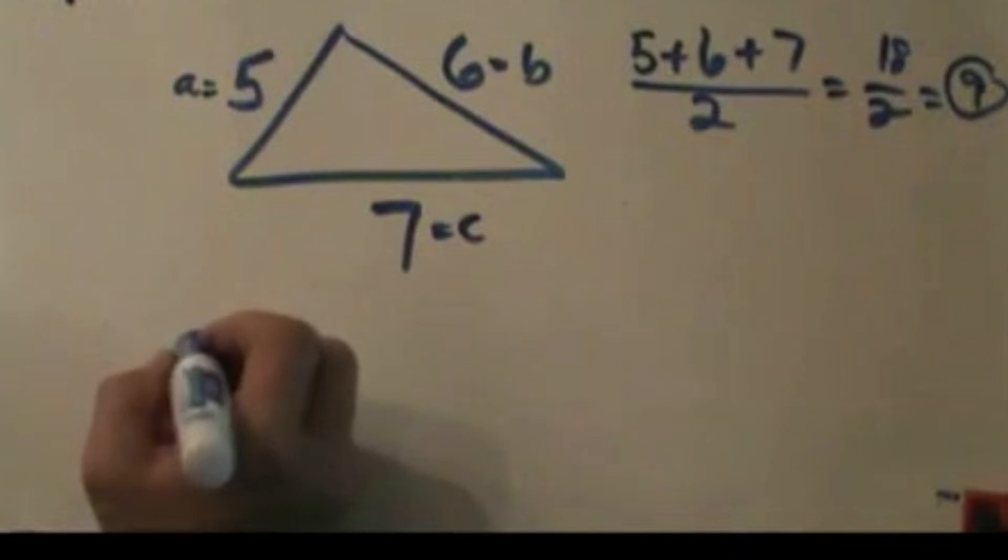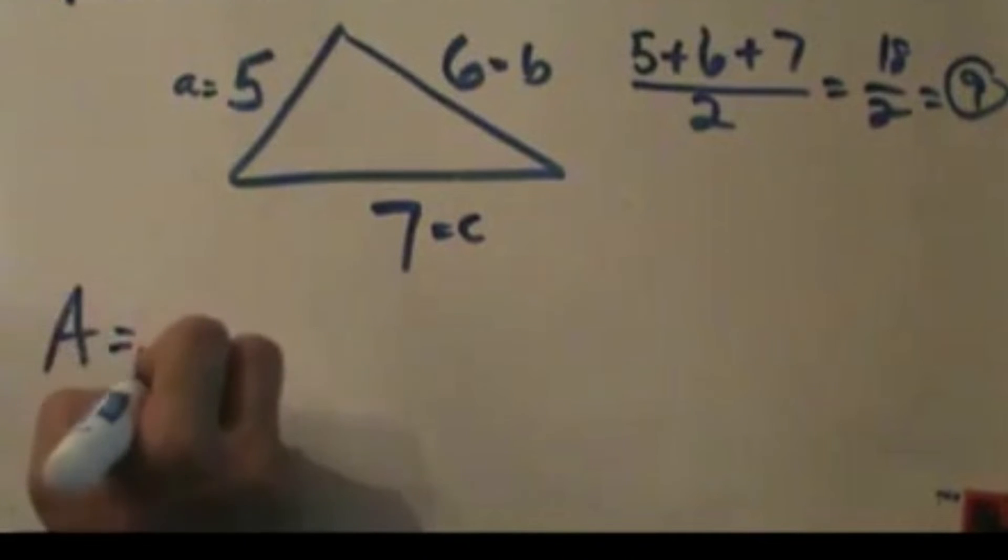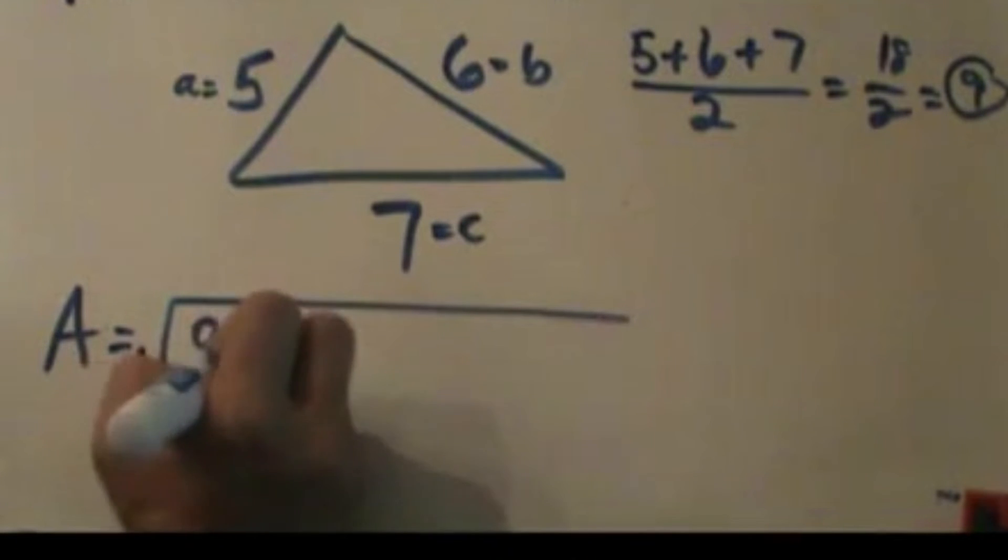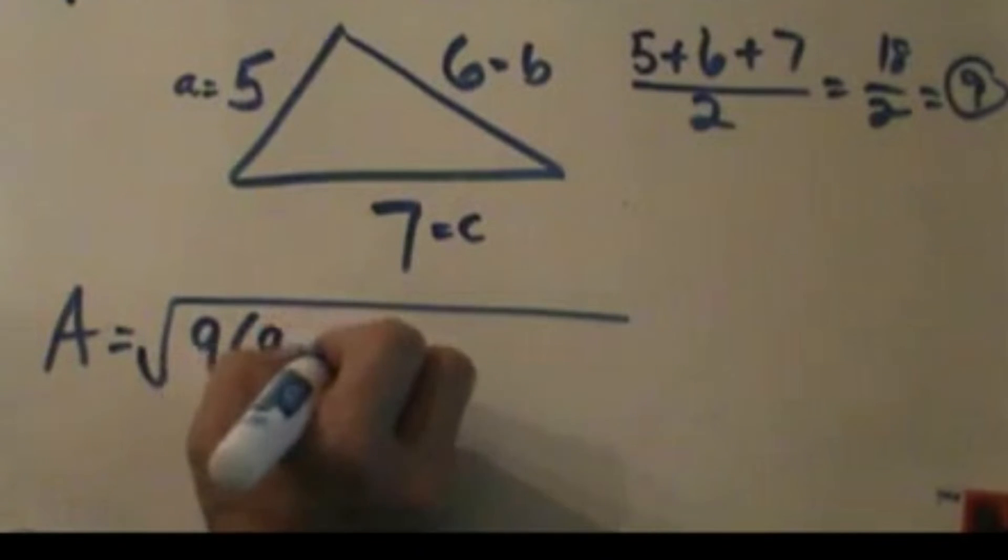Now let's plug it into the formula. I'm going to take S, which is 9, times S minus A, which is 9 minus A, which is 9 minus 5.